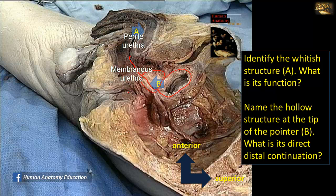The direct continuation of the prostatic urethra is the membranous urethra, located in the deep perineal pouch, which is bounded by these two straight lines — this is the region of the deep perineal pouch.